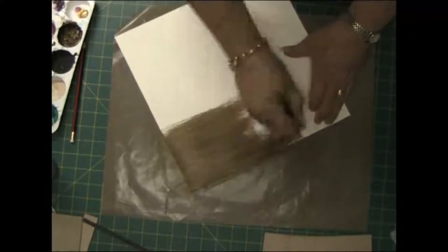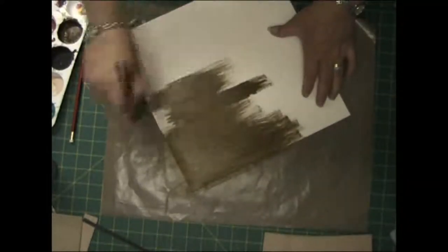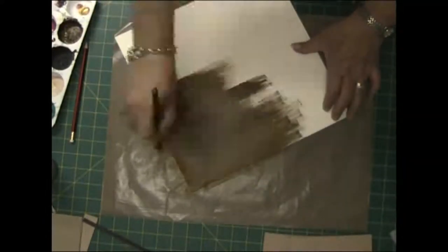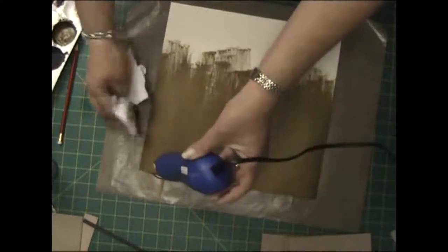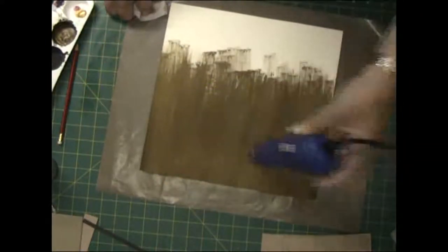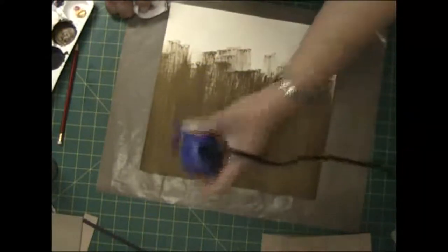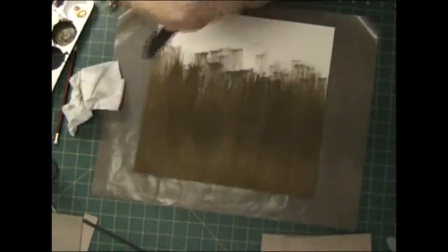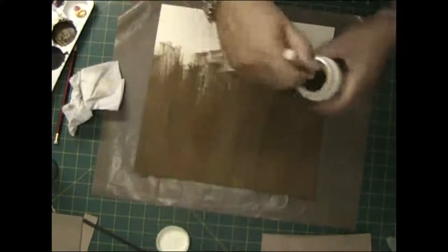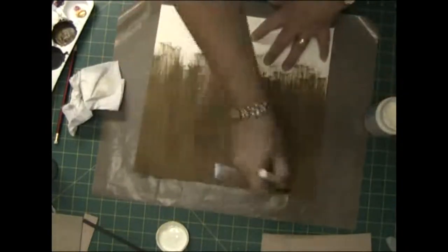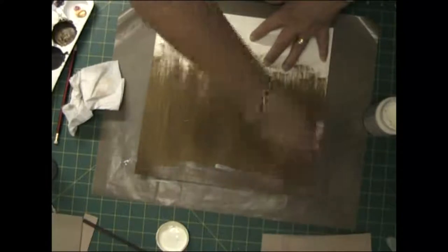Now just taking that same mixture but added a bit more of the gold, and that's onto some cardstock, just vanilla cardstock. Now just painting over some mod podge just to seal it and give it a bit more strength.